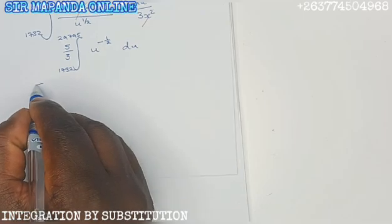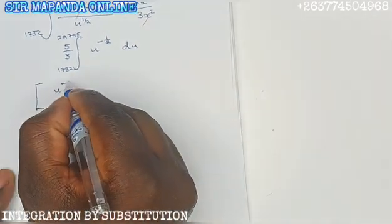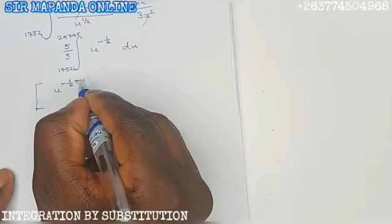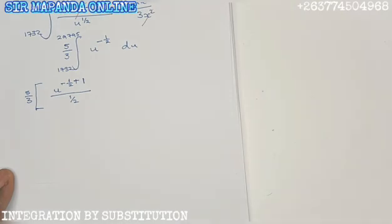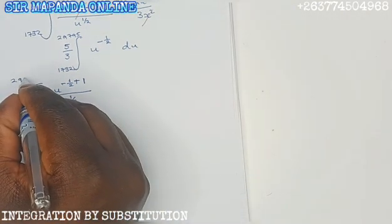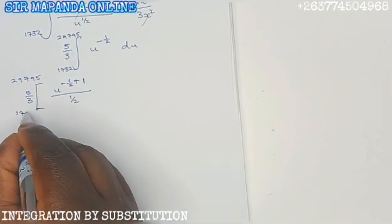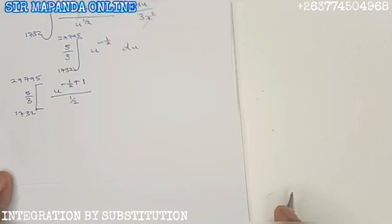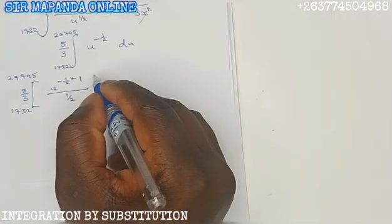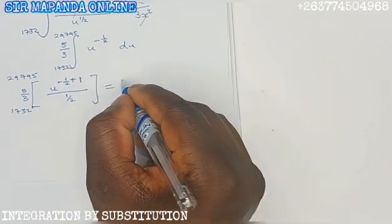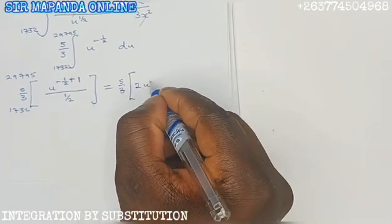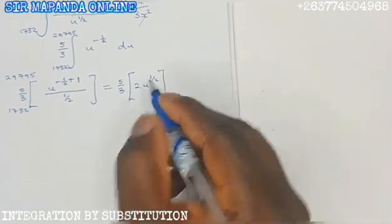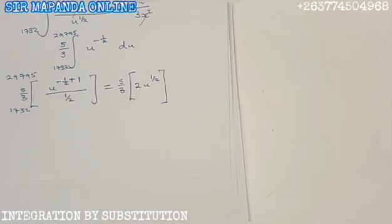Let us integrate. Remember, when integrating, you are going to add this original power by 1, then you divide everything by the new power, which is going to become half. Do not forget that we have 5 over 3 outside. Our upper limit 29,795, our lower limit 1732. If you divide by half, it is equal to multiplying by 2. You write 2u to the power of half. Since minus half plus 1 you get half, which is equal to square root of u.